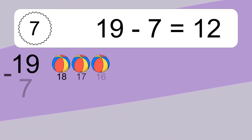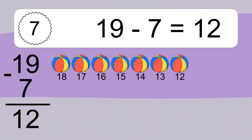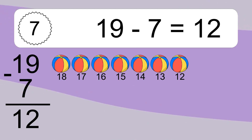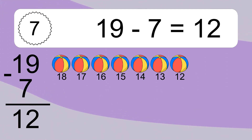19 minus 7 equals what? 19 minus 7 equals 12. Let's count it. 18, 17, 16, 15, 14, 13, 12.